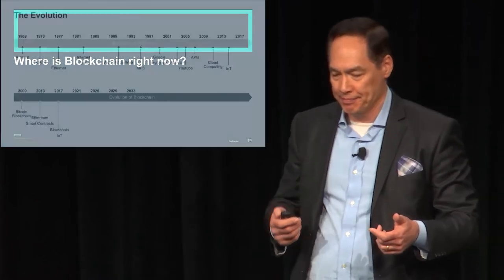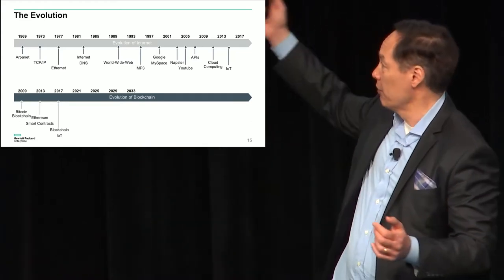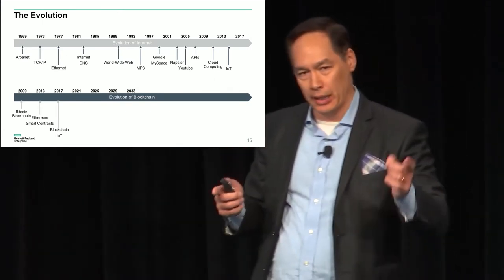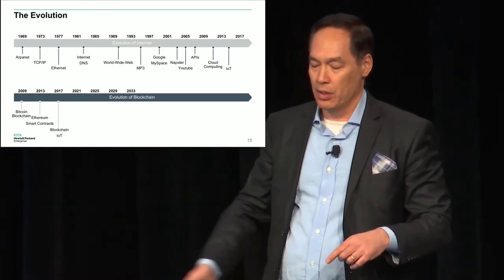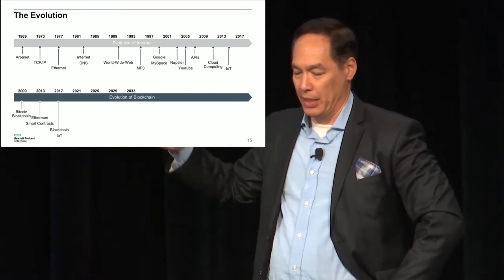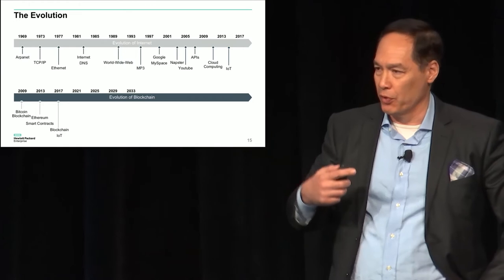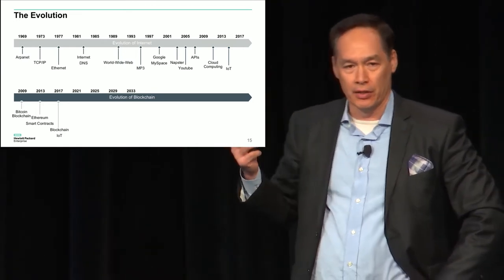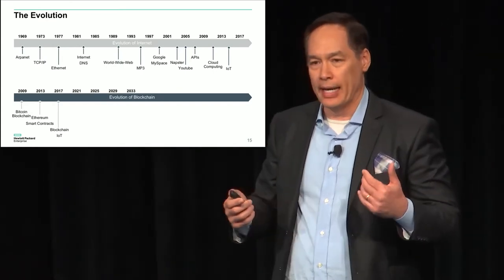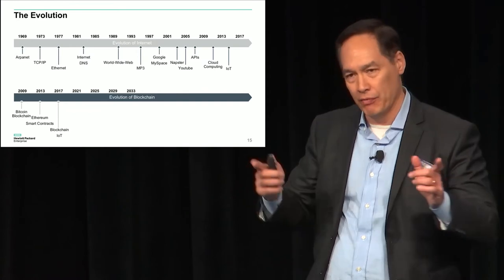Where is blockchain right now? Looking at the evolution of the internet, it took from 1969 to present. The conference covers cloud computing and security, and the big push that really started pushing blockchain — from our perspective at Hewlett-Packard and folks at IBM and others — is the Internet of Things. Because what IoT is going to allow is that individual machines can start ordering things independent of humans.